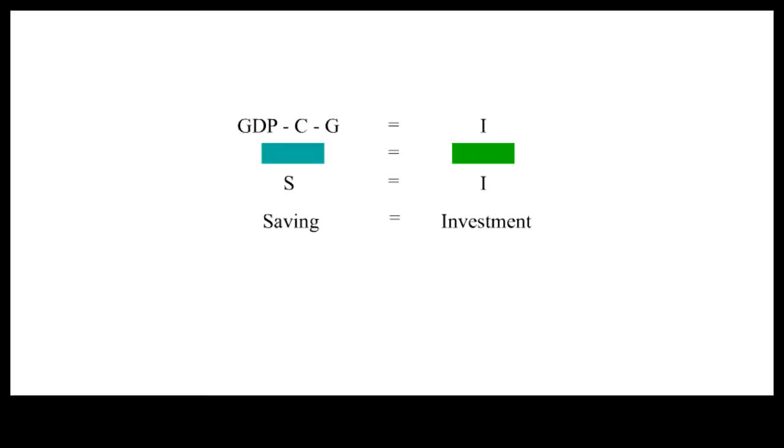If we subtract consumption C and government spending G from GDP, what is left is saving S, which by definition must be equal in value to investment I.